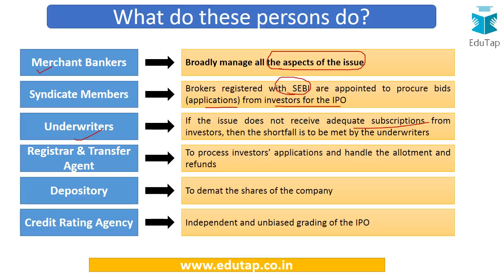Registrar and transfer agents, or RTAs, process investors' applications and handle allotment and refunds. A depository is involved in dematerializing the shares of the company so that people can get those shares in their demat accounts and trade easily. A credit rating agency provides independent and unbiased grading of an IPO. These are the different sets of functions performed by all persons associated with the IPO process.